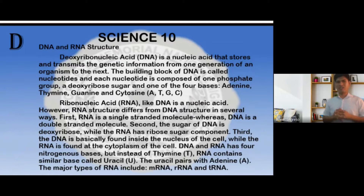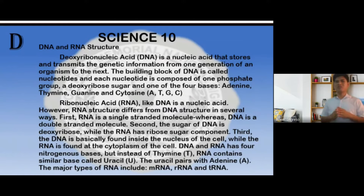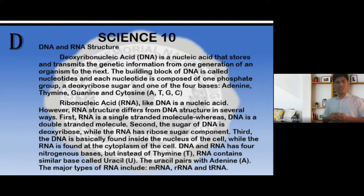Ribonucleic acid, or RNA, like DNA, is a nucleic acid. However, RNA is a single-stranded molecule, whereas DNA is a double-stranded molecule. The sugar of DNA is deoxyribose, while RNA has a ribose sugar component. DNA is found inside the nucleus of a cell, while RNA is found in the cytoplasm. DNA and RNA both have four nitrogenous bases, but instead of thymine, RNA contains a similar base called uracil. Uracil pairs with adenine, and cytosine pairs with guanine. The major types of RNA include messenger RNA (mRNA), ribosomal RNA (rRNA), and transfer RNA (tRNA).